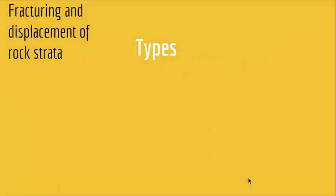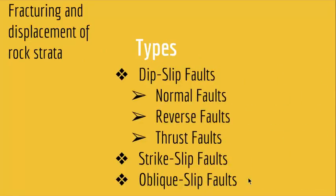So how many types of faults do we have? We have three types: dip-slip faults, strike-slip faults, and oblique-slip faults. Oblique-slip faults are faults that are both strike-slip and dip-slip.